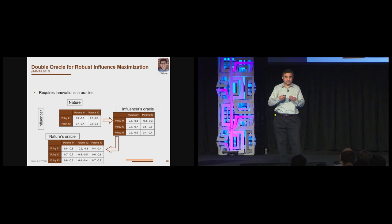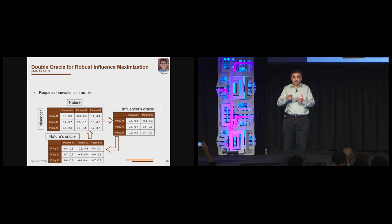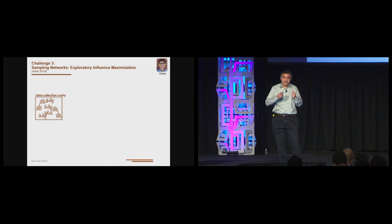Again, to solve the problem, same challenge that we face. The number of strategies from the influencer and nature are massive. And so again, we appeal to the double oracle approach. The key, this may seem similar to the earlier problem, it's the general double oracle approach, but every time there has to be innovation in how the oracles get designed. The second problem I mentioned is that the network itself is not known. We could send our social work colleagues to a homeless shelter and say the network is not known, go survey all the youth, they spend a week, two weeks there and find out who's friends with whom.